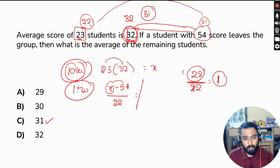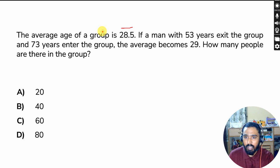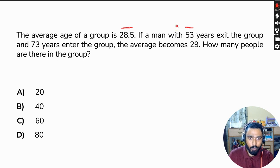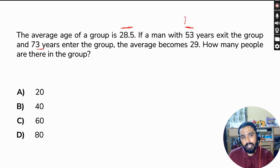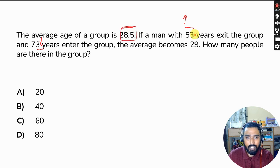Next question: the average age of a group is 28.5. If a man aged 53 exits the group and a man aged 73 enters the group — one person is going, one person is coming. Since 53 is going and 73 is coming, there is a profit of 20.